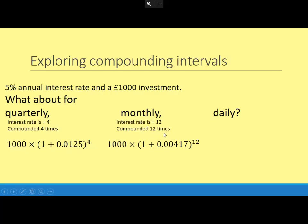If it's monthly, then it's the 5% divided by 12, and then divided by 100 to get it as a decimal.